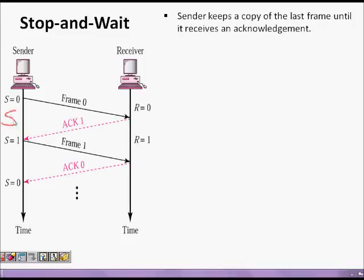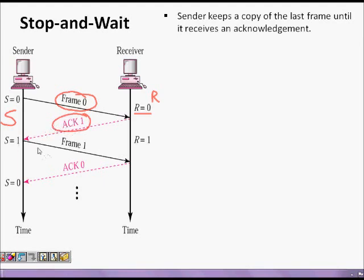The sender has a variable s, which is a binary variable with values 0 or 1. The sender sends frame 0. The receiver has a variable r, which equals the frame number it is expecting to receive. The receiver is expecting frame 0, it receives it, sets r equal to 1, and sends ACK 1. ACK 1 means the next expected frame number is 1, so s now becomes 1.